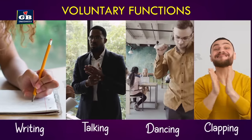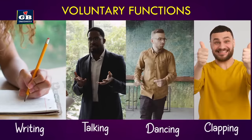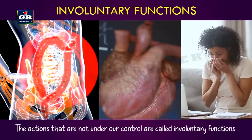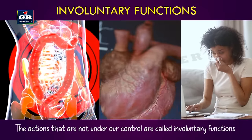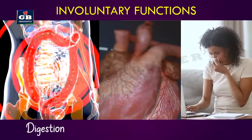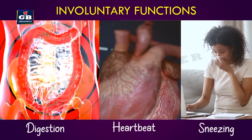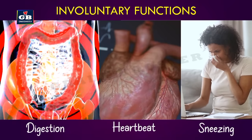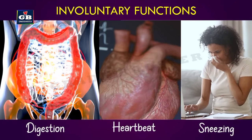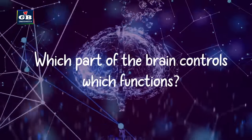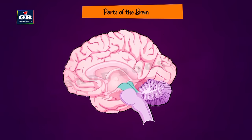Body functions are of two types: voluntary and involuntary. Functions that are under our control are called voluntary functions — writing, talking, dancing, and clapping are examples. Actions not under our control are called involuntary actions — digestion, heartbeat, and sneezing are examples of involuntary actions controlled by the human brain.